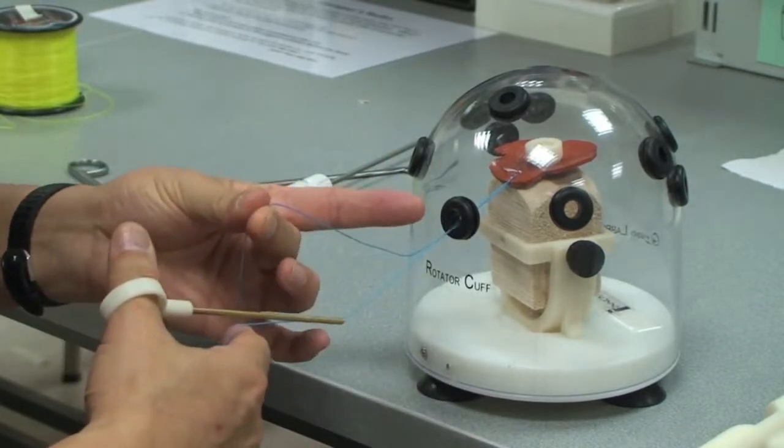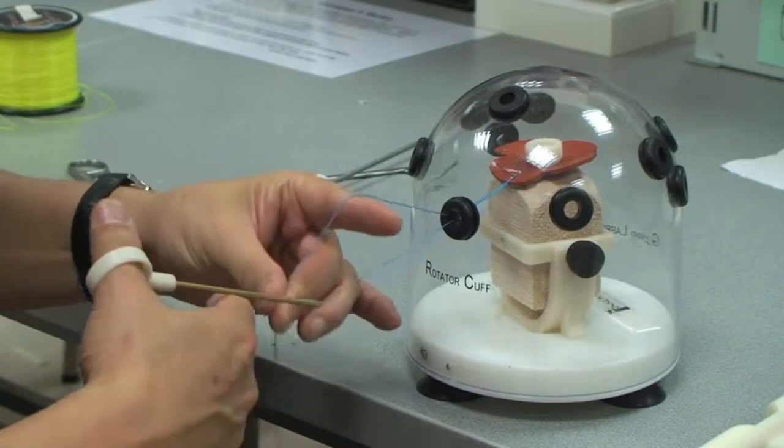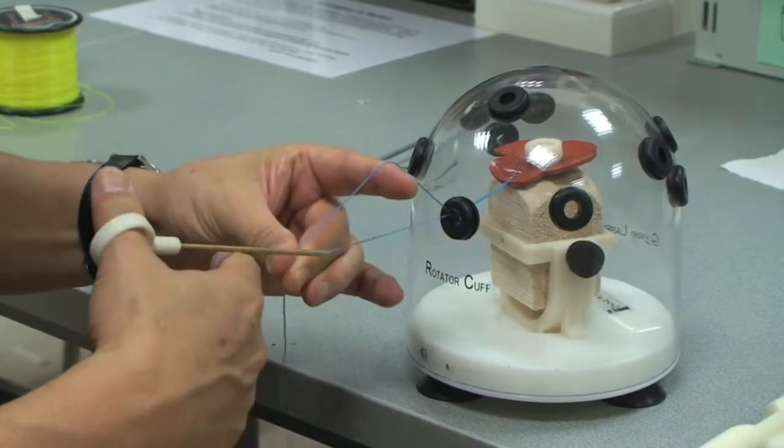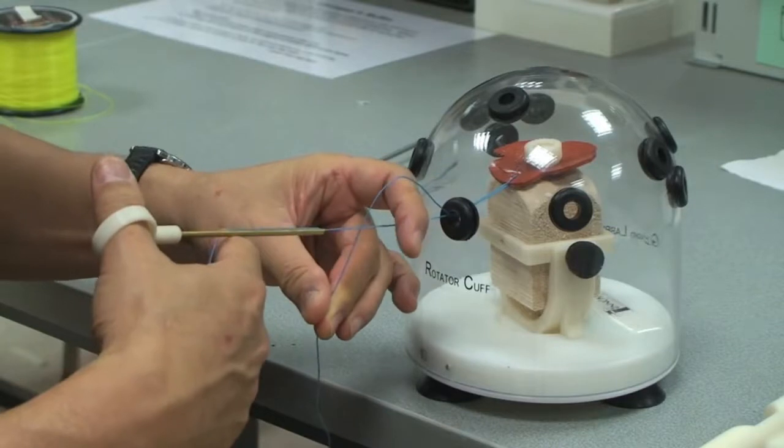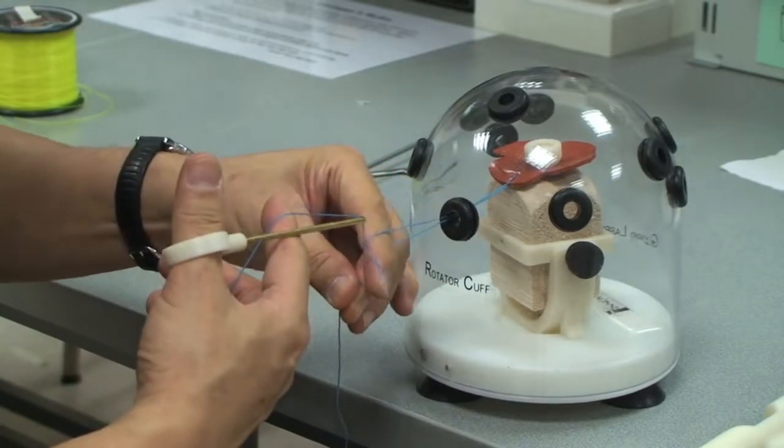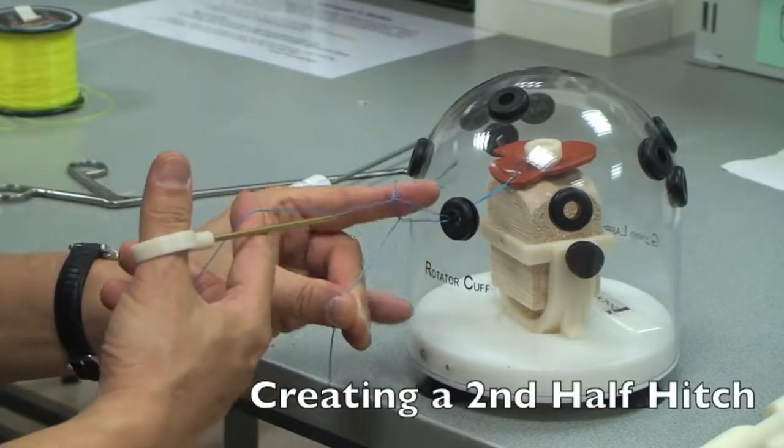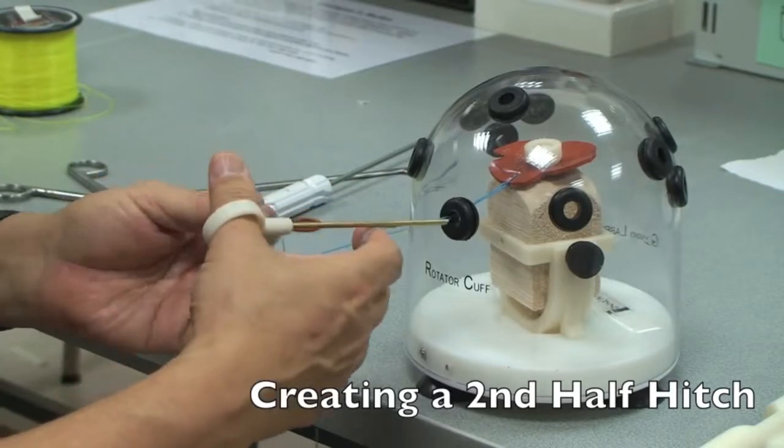So thumb and middle finger on the suture, and the index finger pushing the wrapping limb up. Loop it around the post, use the back of the index finger, flip it through. And then there you go.